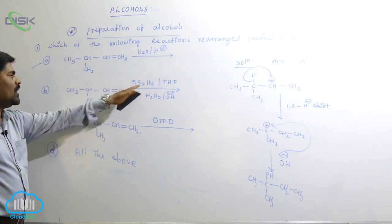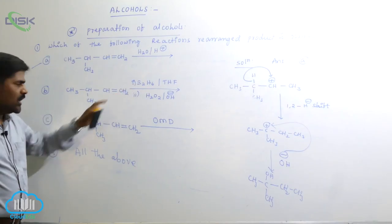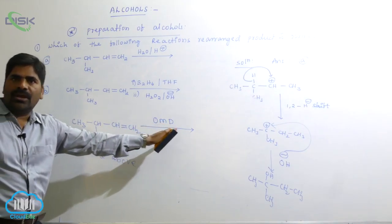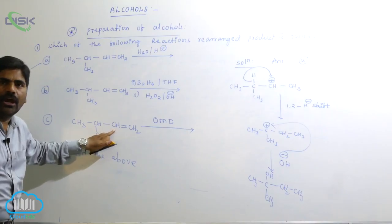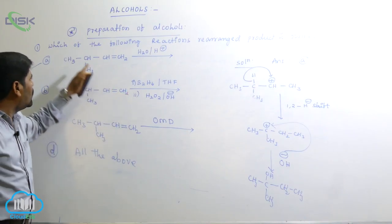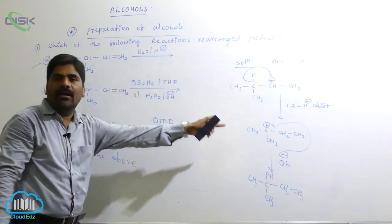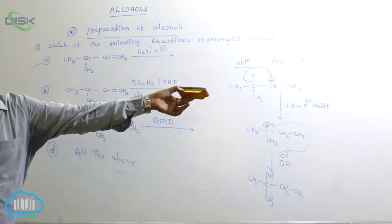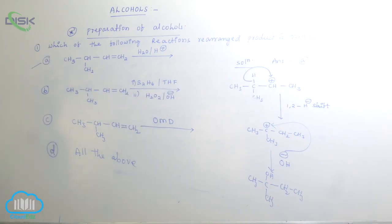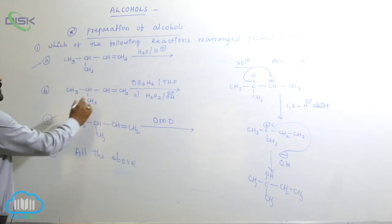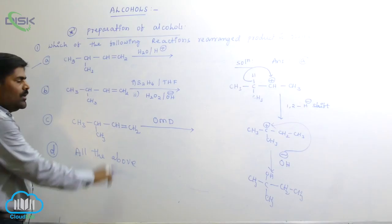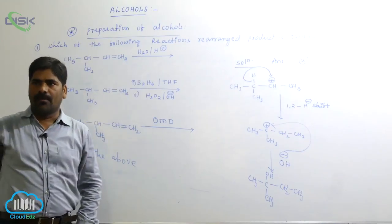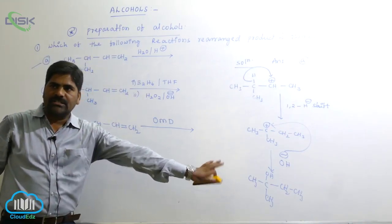In OMD (oxymercuration-demercuration), no rearranged product is formed — OH is added directly as Markovnikov product. But in reaction A (hydration with H⁺), rearrangement is possible, so the first option is the correct answer. In summary: reaction A gives a 1° alcohol directly, reaction B gives a 2° alcohol, and reaction A via rearrangement gives a rearranged 3° alcohol.